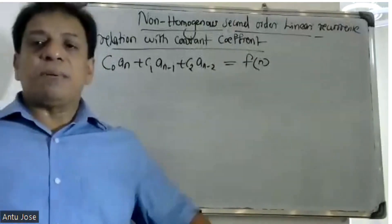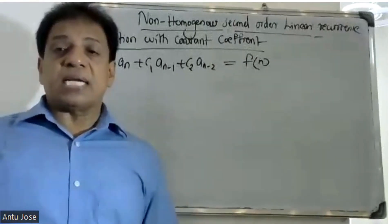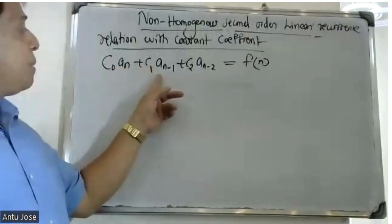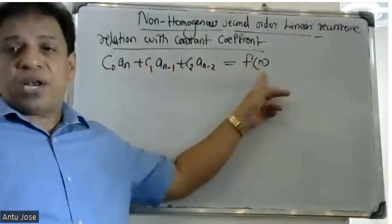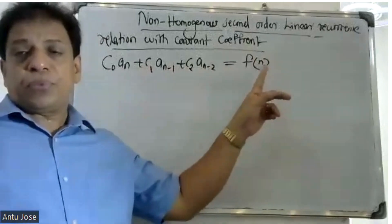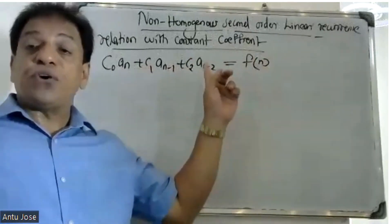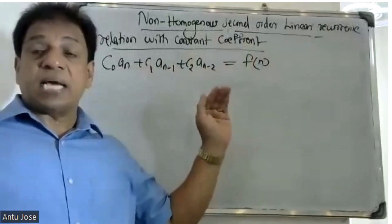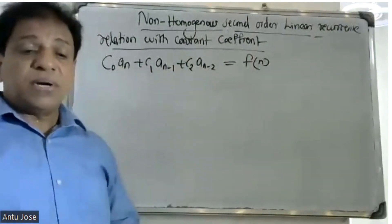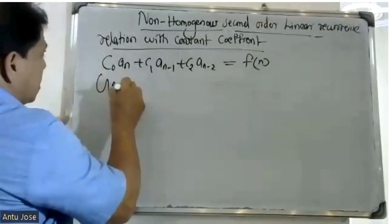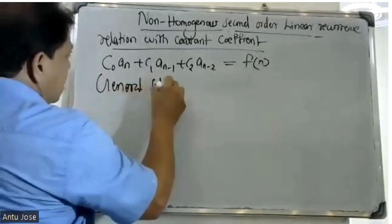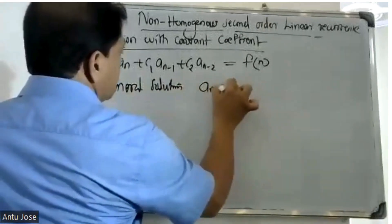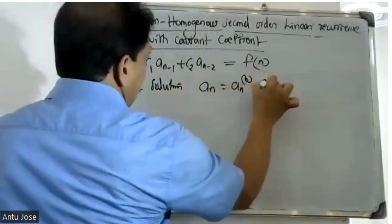Good morning students. At this time, for example, the non-homogeneous recurrence relation. A second order non-homogeneous recurrence relation — where f(n) is not equal to zero — is non-homogeneous. The general solution is: a_n equals a_nh plus a_np.